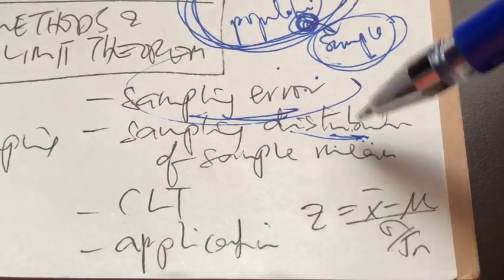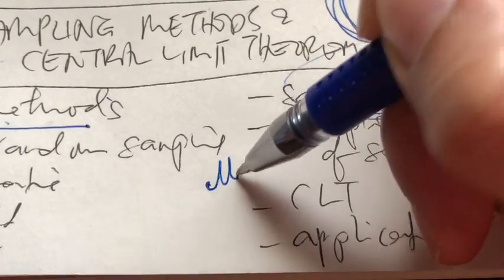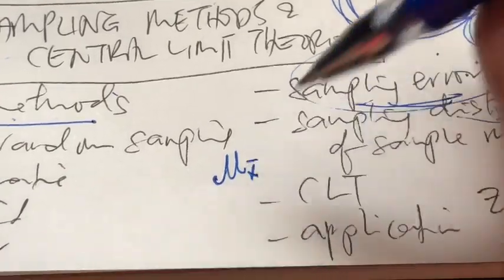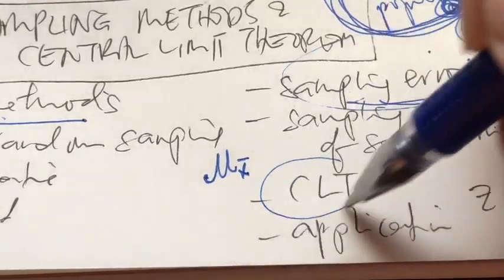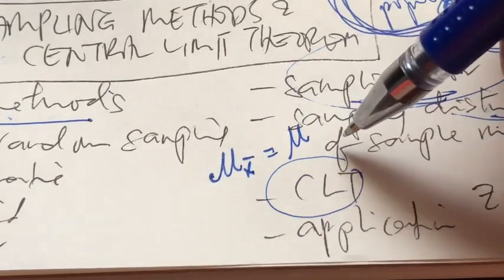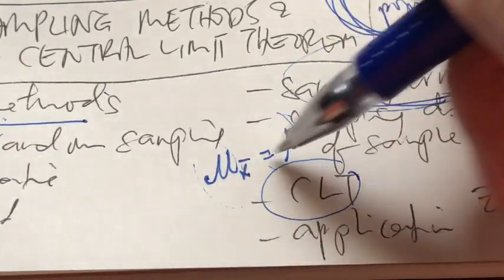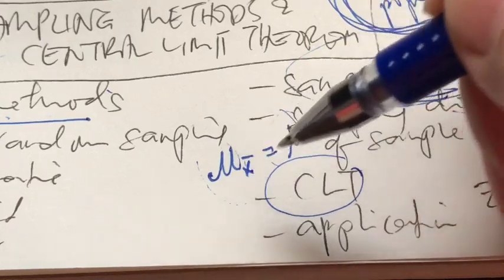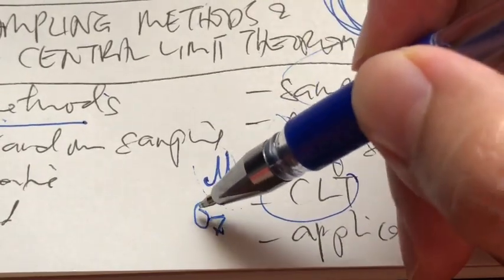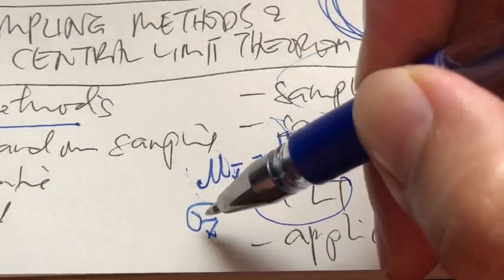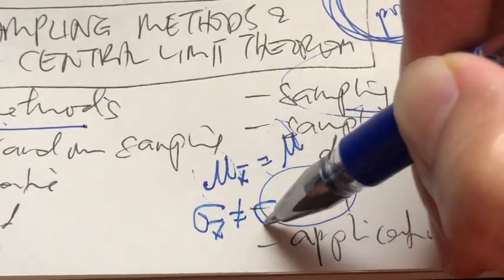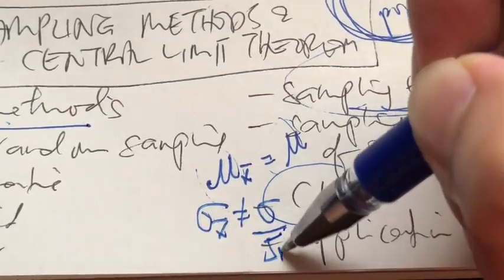For the sampling distribution of sample mean, we learned its mean. According to the central limit theorem, the mean of the sampling distribution of sample mean is equivalent to mu. That is why we just write it as mu. For the dispersion, we also learned about the standard error — which is the standard deviation of the sampling distribution of sample mean. The standard error equals the standard deviation divided by the square root of n.